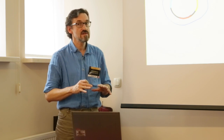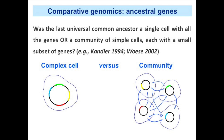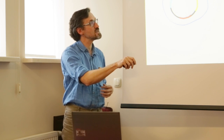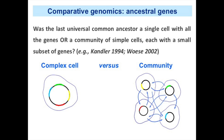However, some people have tried to reconcile this larger list with the idea of a very simple ancestor, based on ideas by Otto Kandler and Karl Woese, saying that this whole list of genes was not present in a single complex cell, but in a community of much simpler cells with small genomes — just a few genes each — in very strong interaction, exchanging genes and products such as proteins.